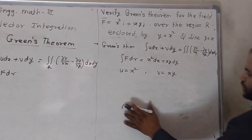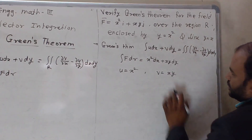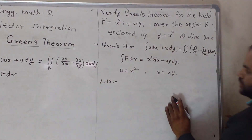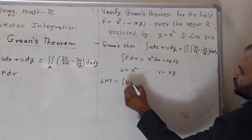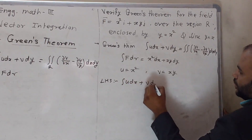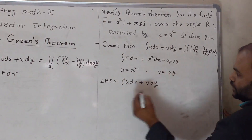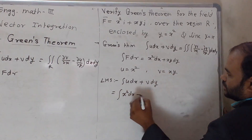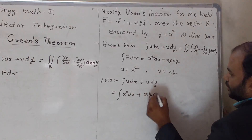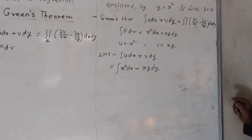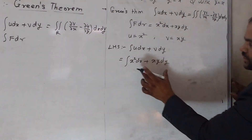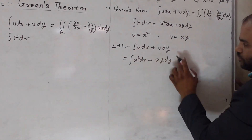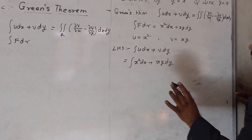Now let us consider the LHS. LHS is the single integration of u dx plus v dy. Putting the values of u and v, we get the single integration of x² dx plus xy dy. To solve this integration we have to find out the limits first and convert the number of variables into one form.